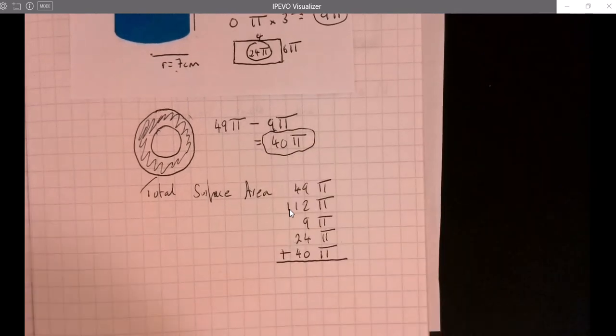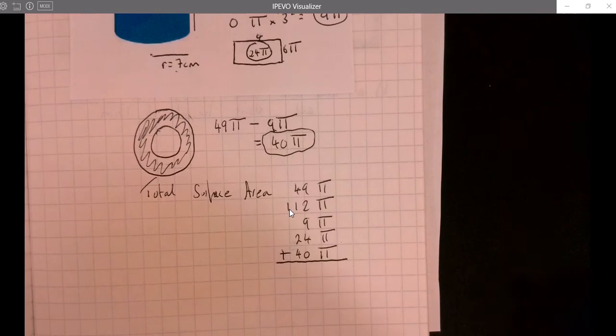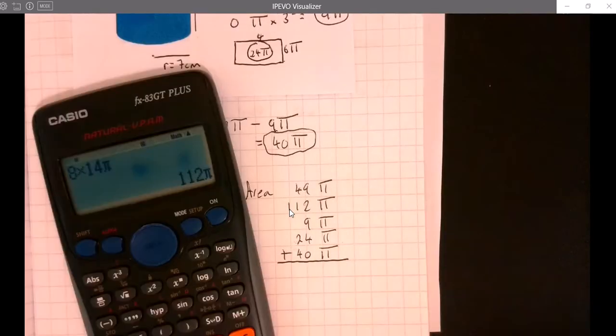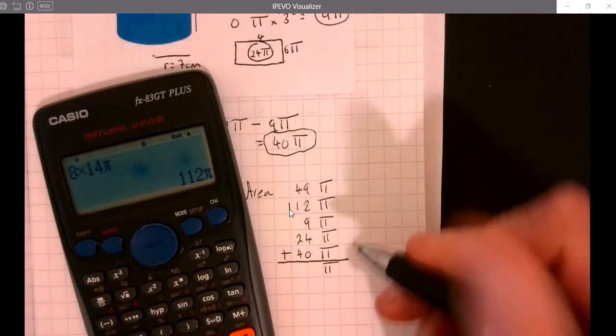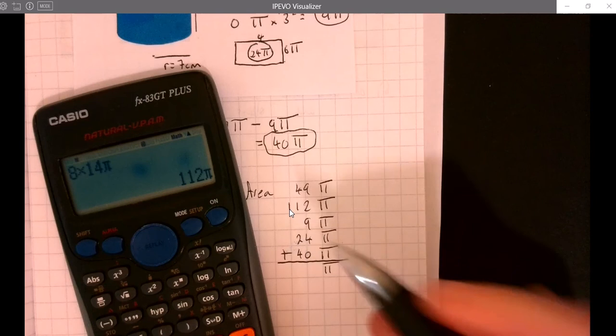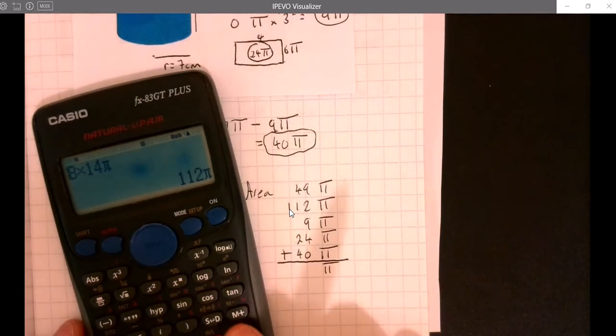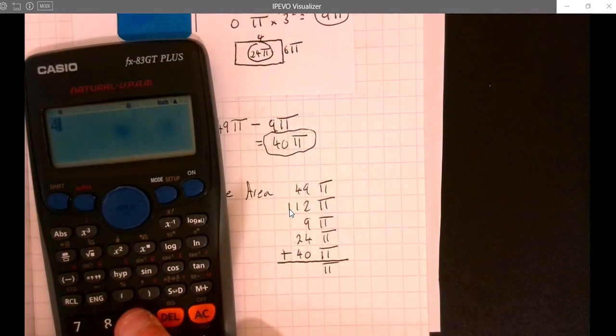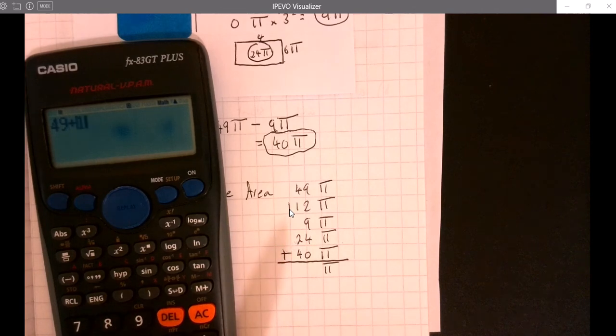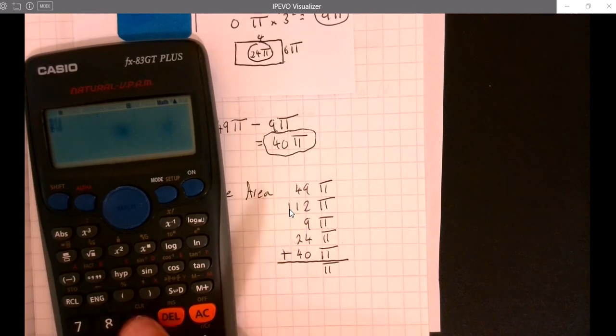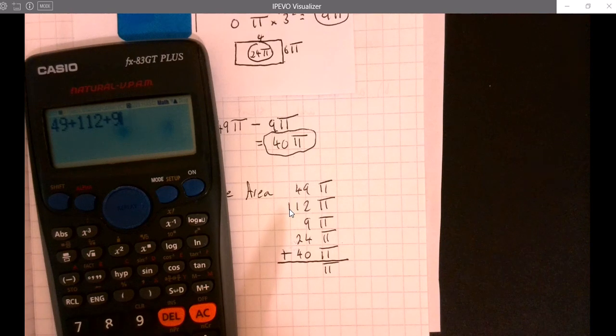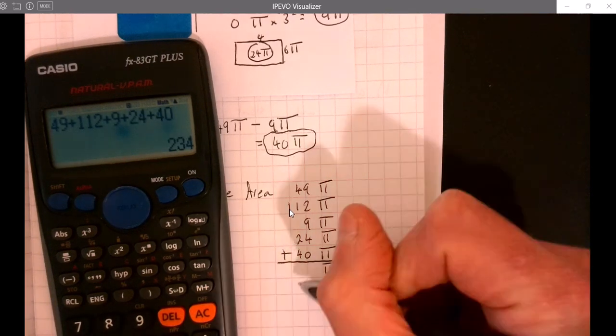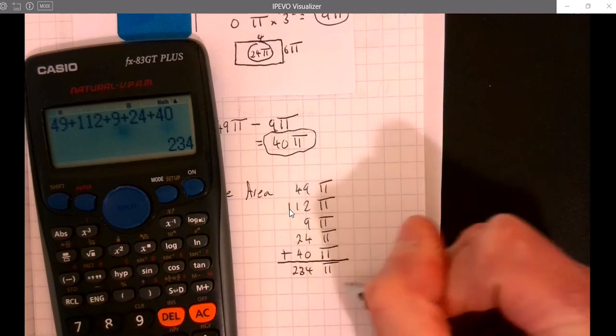We're just going to add that lot together. Again use a calculator, I don't even need to write π down this time. Let's add them up quickly: 49 + 112 + 9 + 24 + 40 = 234π.